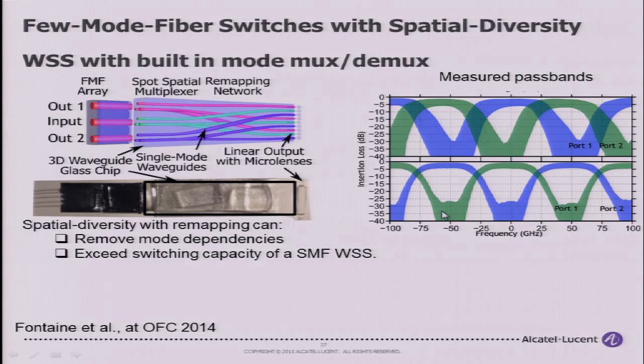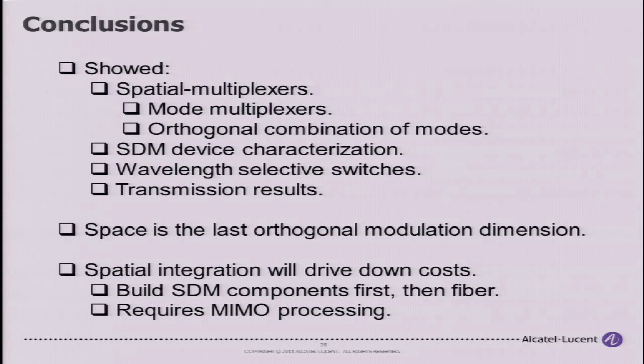To conclude: I showed spatial multiplexers, how to characterize devices, some transmission results, and wavelength selective switches. The space dimension is the last orthogonal modulation dimension we can use — if we don't use it now, eventually we'll have to. We may need to use multiple-input multiple-output processing because the only way to drive down cost is through spatial integration, and whenever you put components closer together you're likely to get some type of crosstalk.